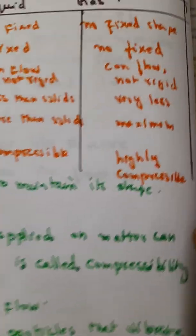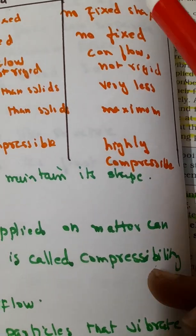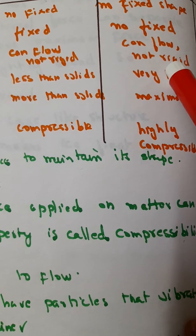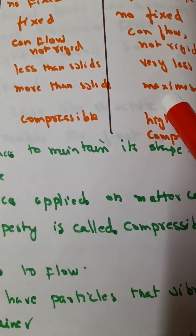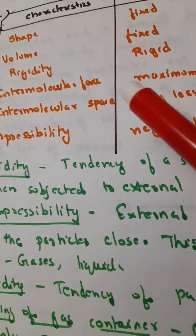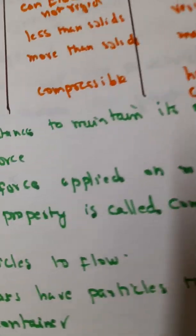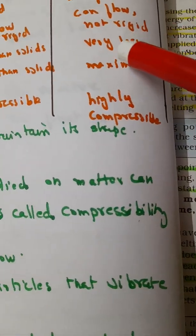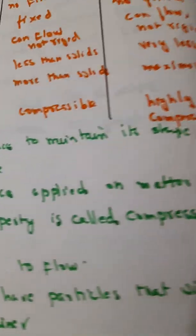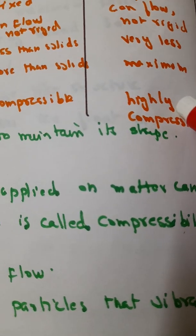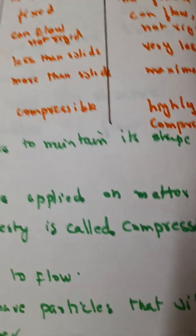So now what about the gas? Gases have no fixed shape, volume is also not fixed, and the gases can flow, it is not rigid. Then intermolecular force, intermolecular space and compressibility. So intermolecular force is very less and then the intermolecular space. Because you know gas molecules are very far away from each other. So intermolecular space is maximum and it is highly compressible.